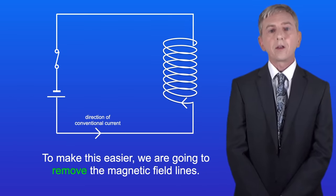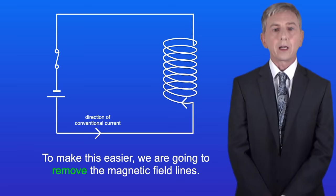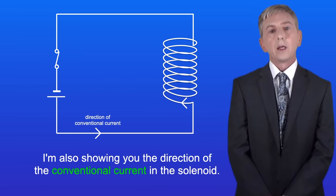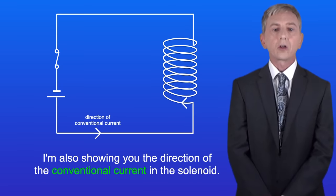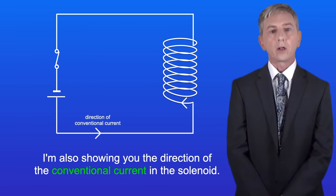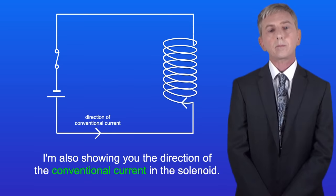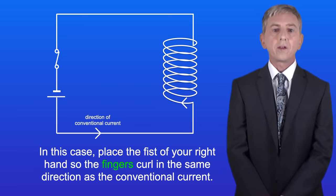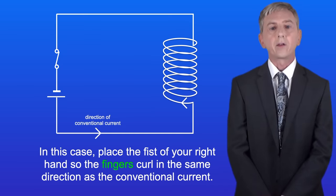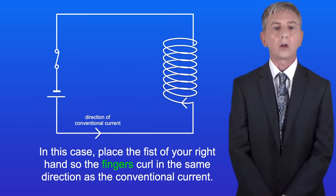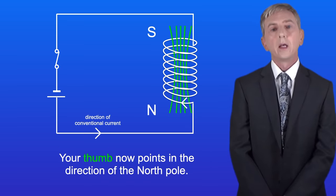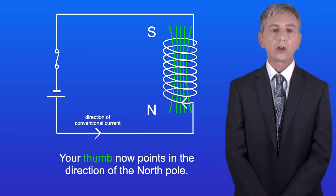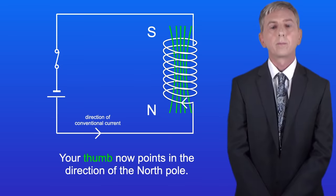In the exam you could be asked to work out the direction of the magnetic field in a solenoid, and again we can apply the right hand grip rule. To make this easier we're going to remove the magnetic field lines. I'm also showing you the direction of the conventional current in the solenoid. In this case, place the fist of your right hand so the fingers curl in the same direction as the conventional current — your thumb now points in the direction of the north pole.